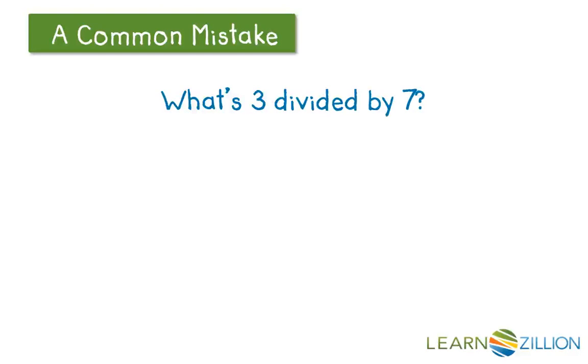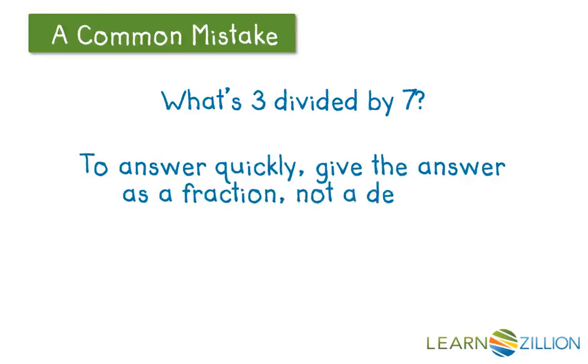Now in this lesson we're going to be needing to divide in some examples where we don't get an integer as an answer, such as what's three divided by seven. A common mistake is thinking that you always need to give your answer as a decimal. In fact it's often much more efficient to give the answer as a fraction because three divided by seven can just be written as three sevenths.